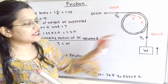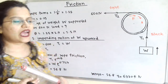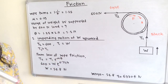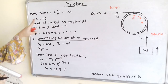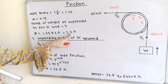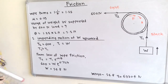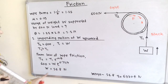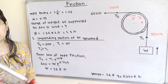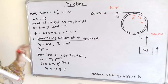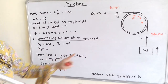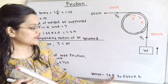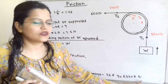Applying the rope friction formula: T2 = T1 × e^(μθ). Here, μ × θ = 0.29 × 2.5π = 0.725π. So 600 = W × e^(0.725π), giving W = 56.8 N. Therefore, the range of load W supported by the 600 N force is from 56.8 N to 6330.4 N.